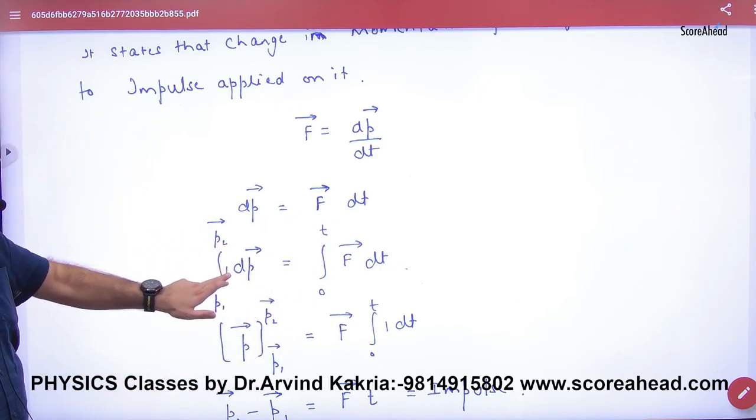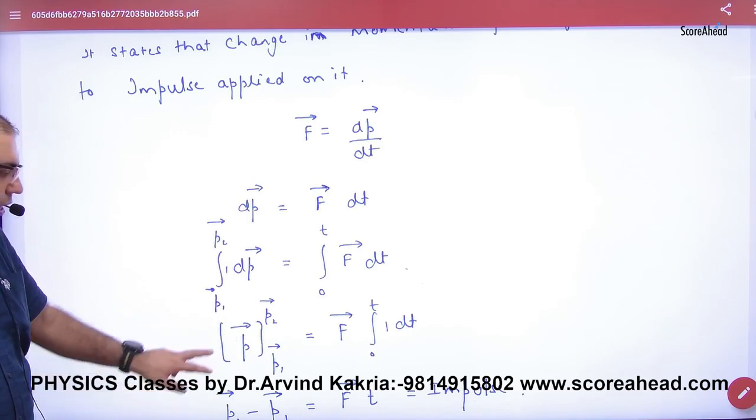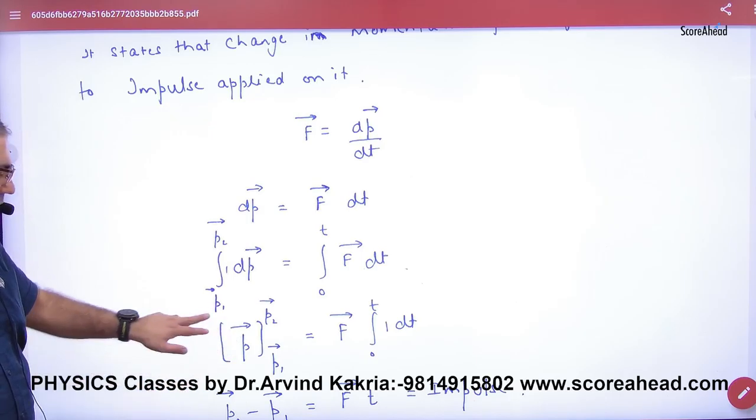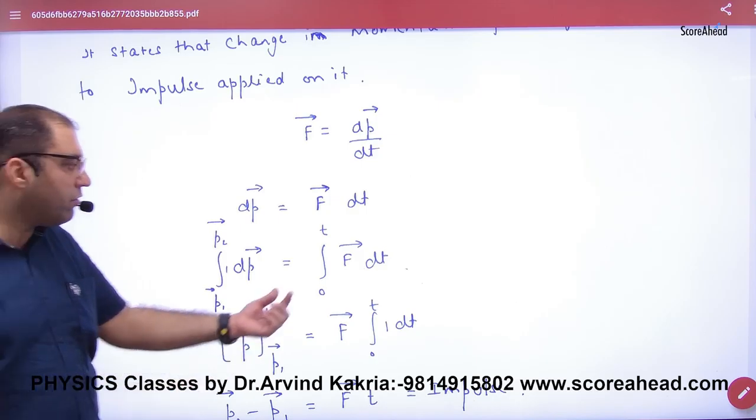Integration of dp from P1 vector to P2 vector gives P2 vector minus P1 vector, which is the change in momentum.